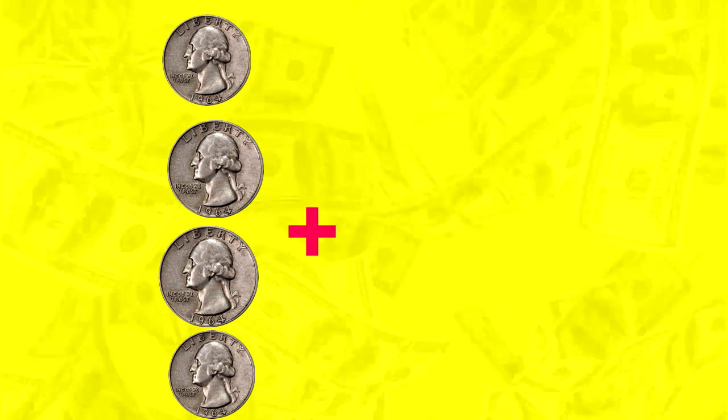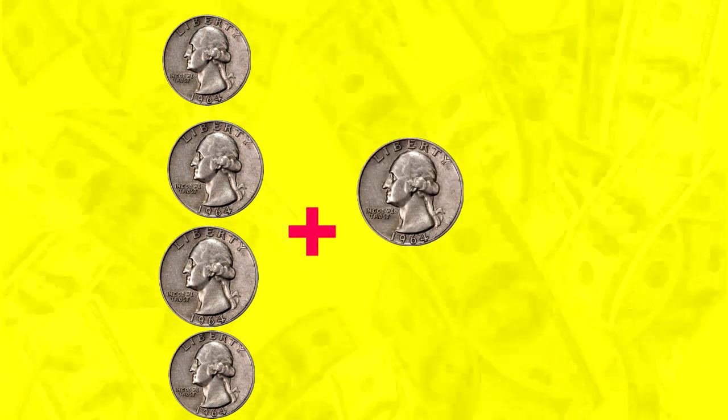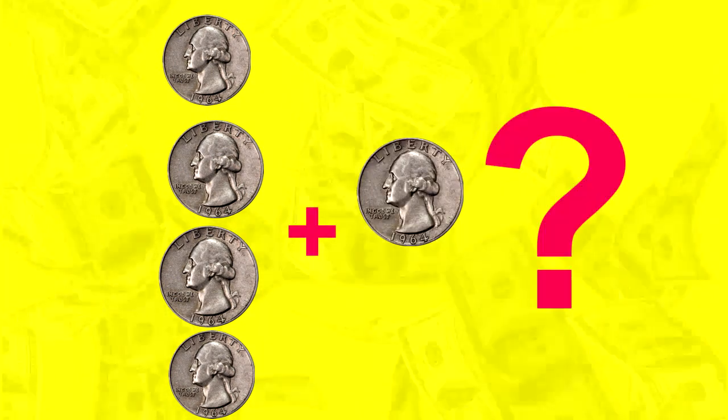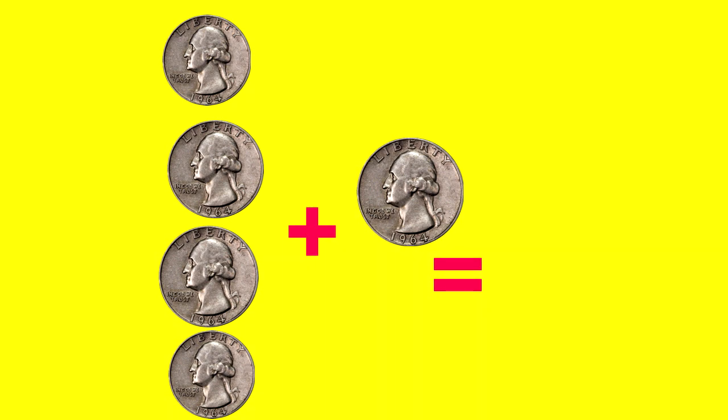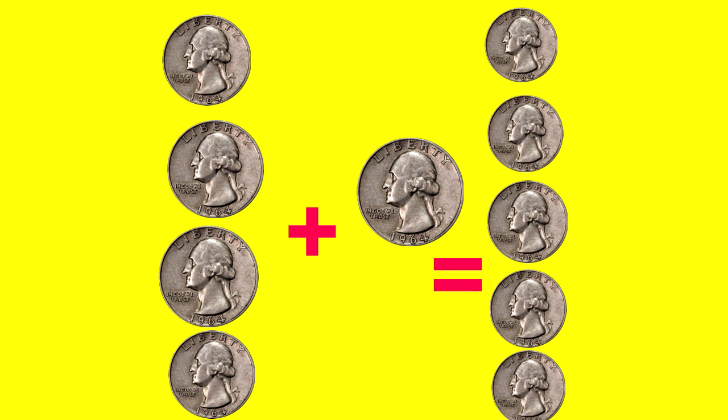If I had four quarters, and my mom gave me one more, how many quarters do I have? You're right, five quarters.